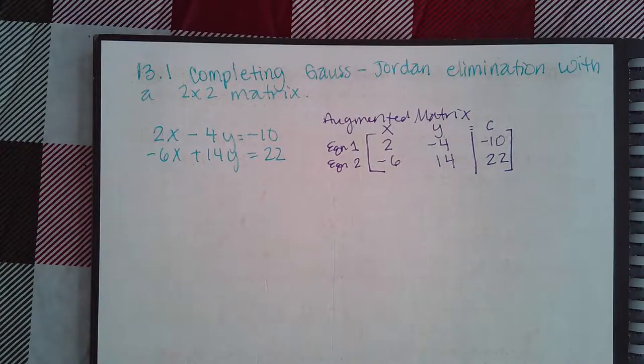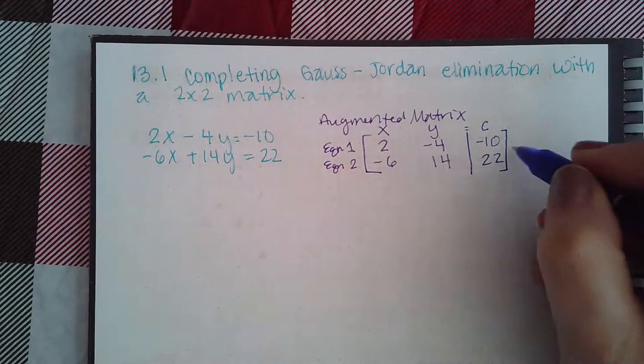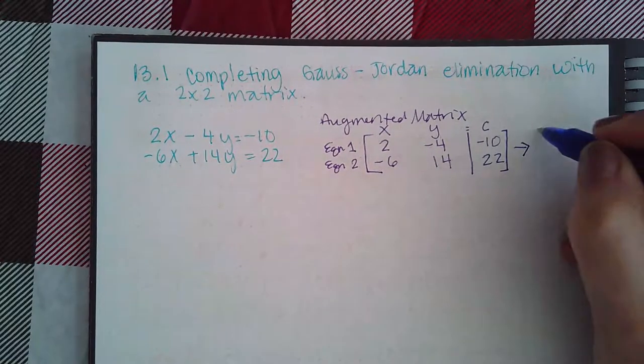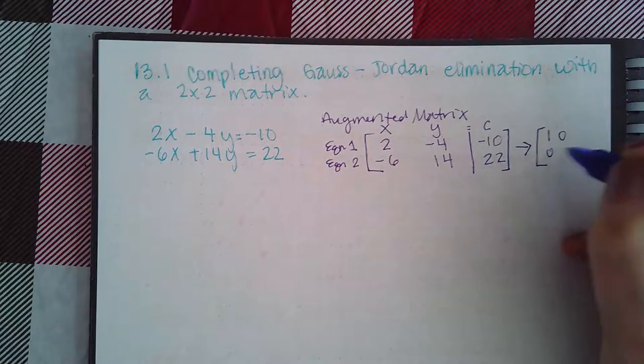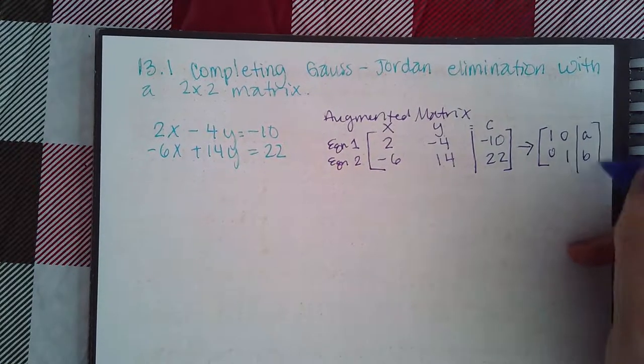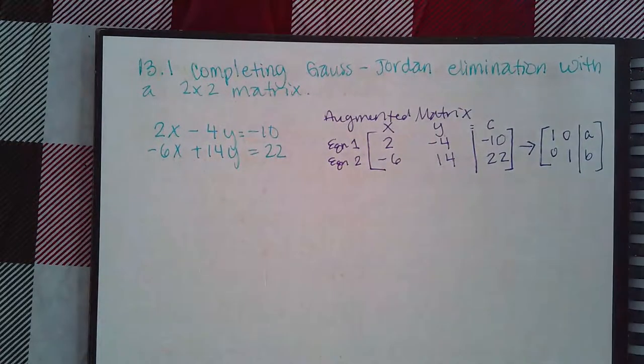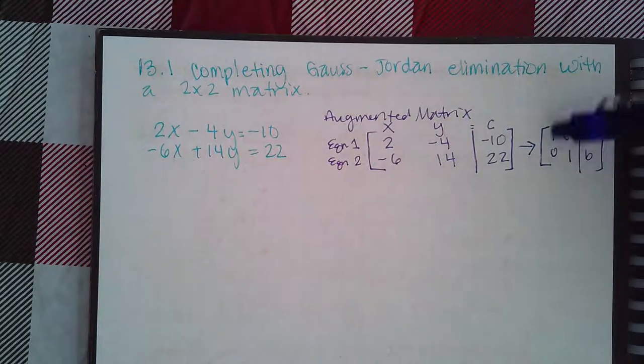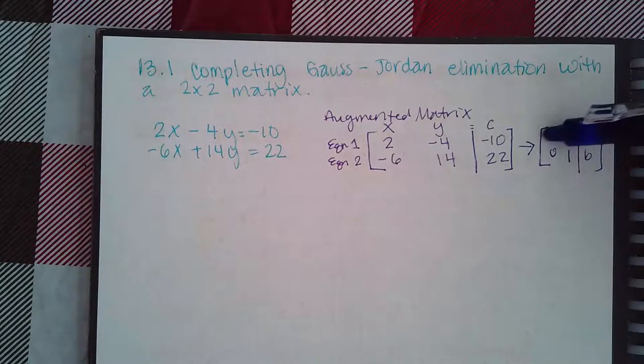Now, from there we have to do what's called Gauss-Jordan elimination. Gauss-Jordan elimination is basically the process of turning what you have into this matrix. So, you'll want to get the diagonal matrix on the left-hand side, or the identity matrix, on the left-hand side.